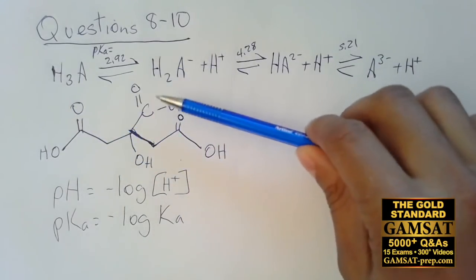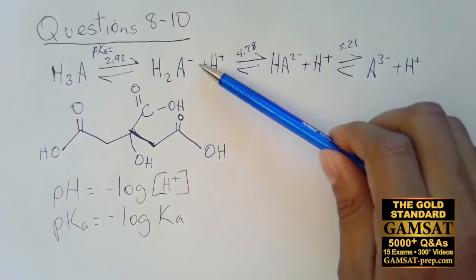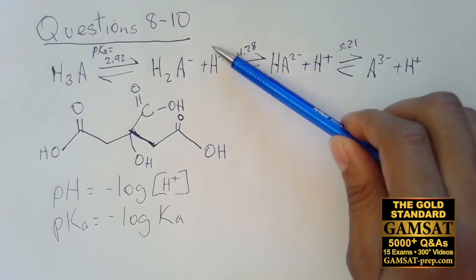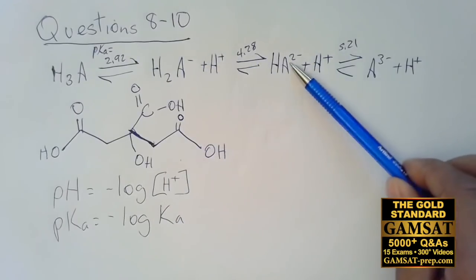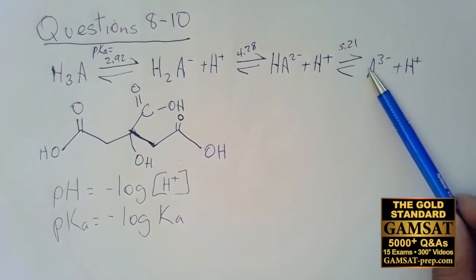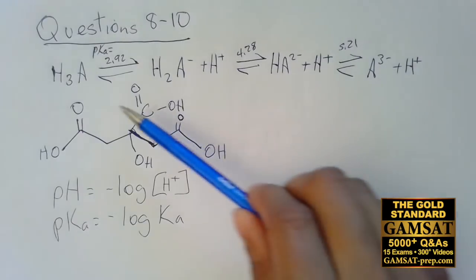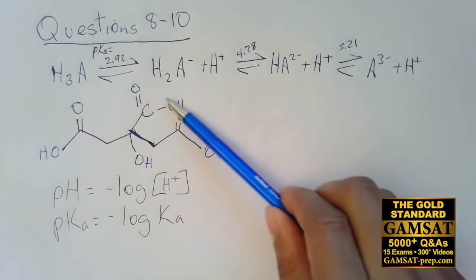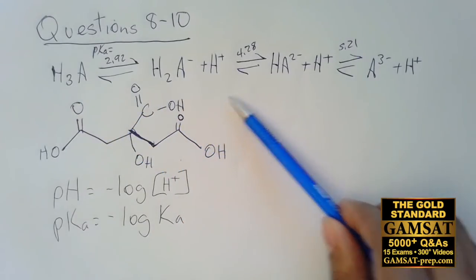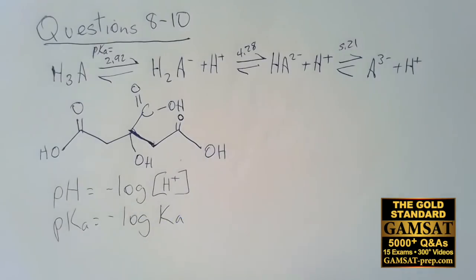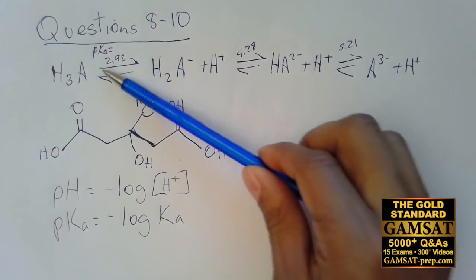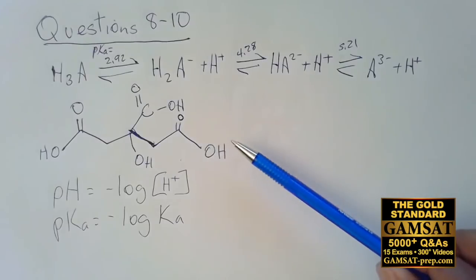Even on the exam paper, it would be natural for you to add plus H⁺ for each of the reactions, so that you have a continually balanced reaction occurring, and then you have the different pKa values.